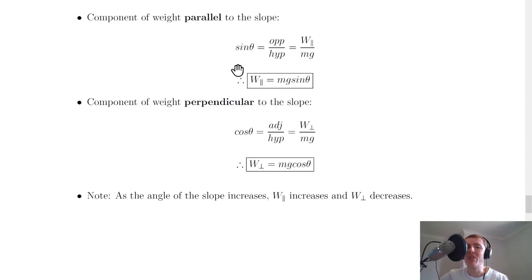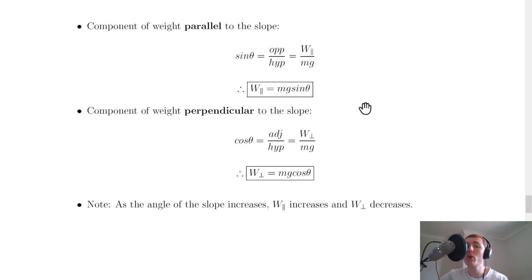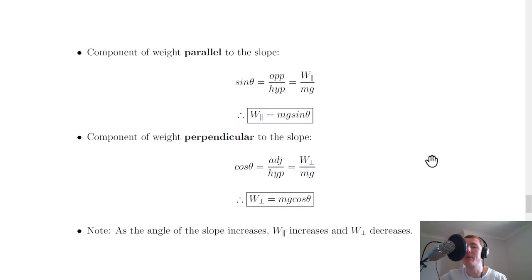This parallel component is used and asked about an awful lot in higher physics, whereas the perpendicular one is very rarely asked about. You'll often calculate the component of weight parallel to the slope, and you need to remember mg sin θ because you don't get it on the relationship sheet in the exam. You do get W = mg, so just remember to add sin θ or cos θ depending on parallel or perpendicular.